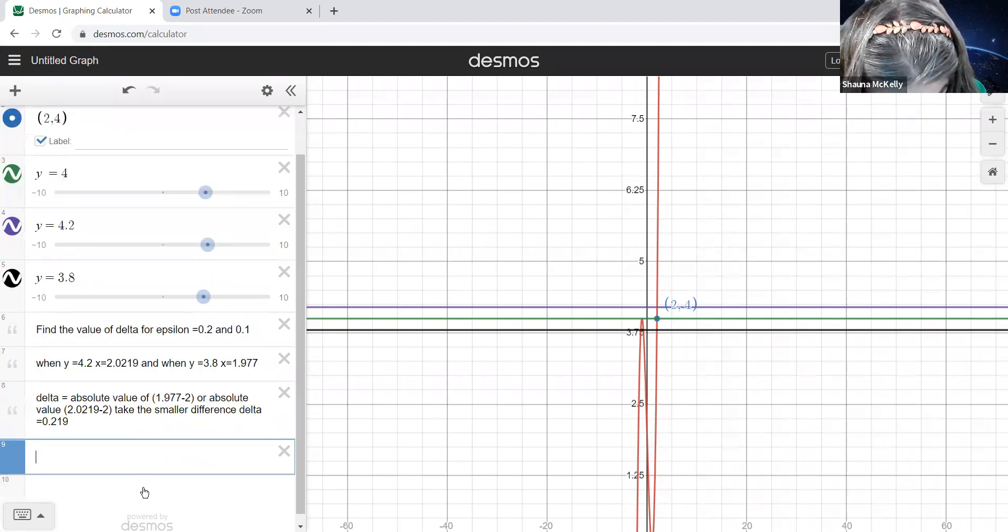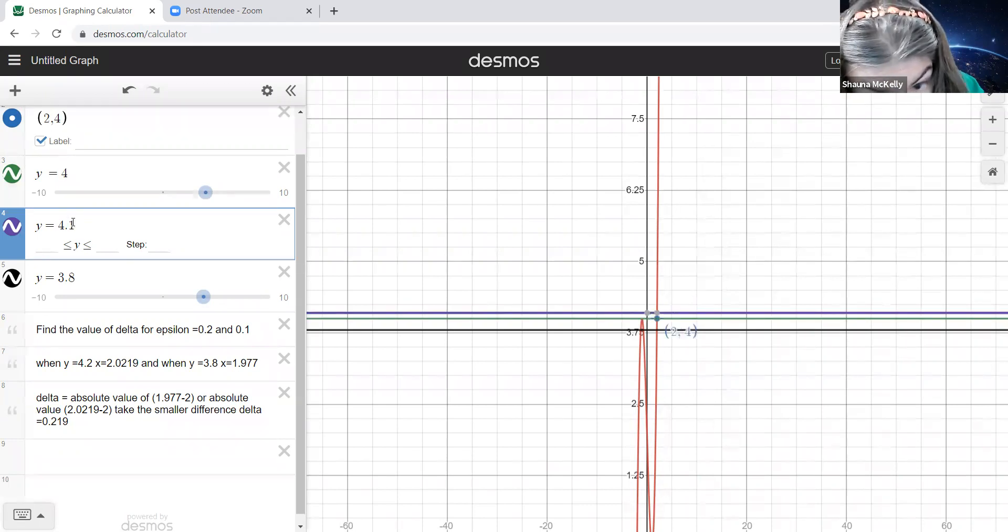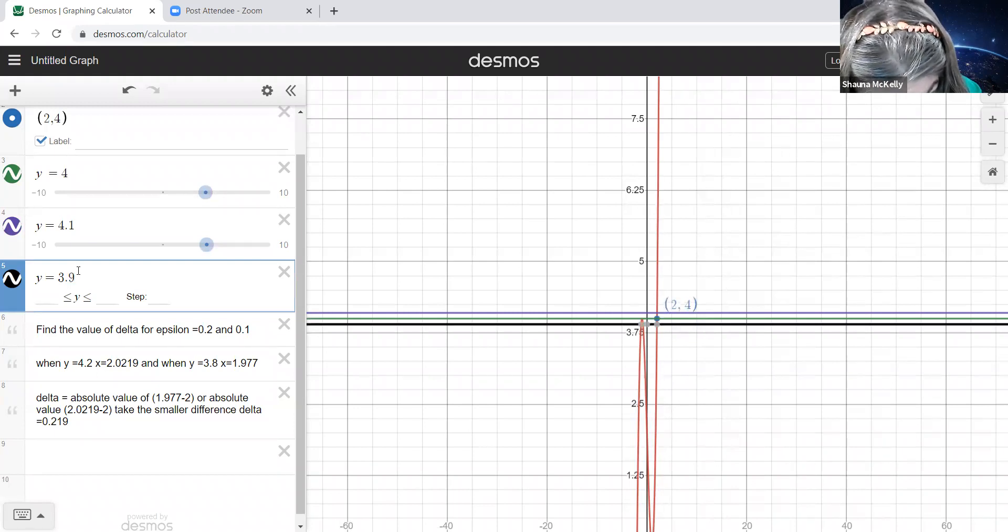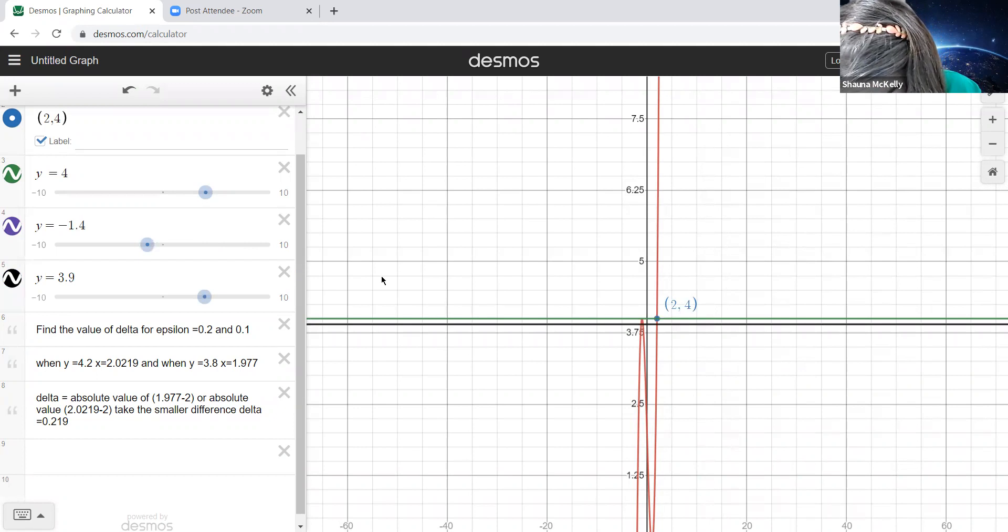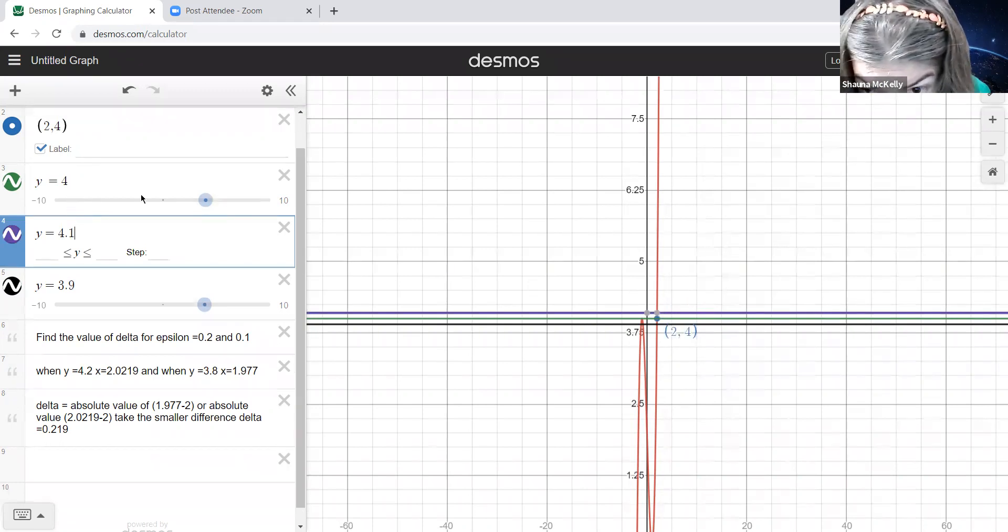And then we're going to repeat the process. But we're going to repeat it for epsilon equal to 0.1. So you're going to keep your curve. You're going to keep the line y equals 4. But instead of having 0.2 difference, we're going to have 0.1 difference. So we're going to have the line y equals 4.1. And we're going to have the line y equals 3.9. So essentially what I've done is get closer to the limit.